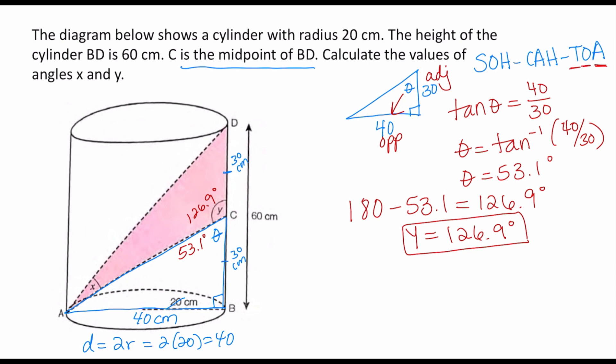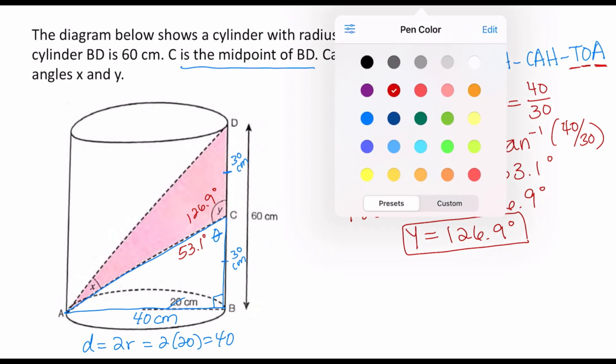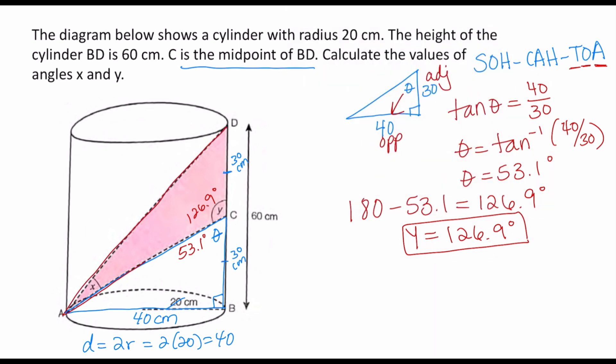Now, triangle ADC is not a right triangle — it's an obtuse triangle because angle Y is 126.9 degrees, not 90. So we can't use SOHCAHTOA to find angle X. I can use the sine rule, since the side opposite angle X in the red triangle is 30. For the sine rule I need angle Y, which is 126.9, and the side AD. So I need to find AD first.